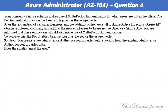Question number four. Your company's Azure solution makes use of multi-factor authentication for when users are not in the office. The per-authentication option has been configured as the usage model. After the acquisition of a smaller business and adding new employees to Azure Active Directory, these employees should also use multi-factor authentication. To achieve this, the per-enabled-user setting must be set for the usage model. The proposed solution is: you create a new multi-factor authentication provider with a backup from the existing MFA provider data. Does this meet the goal? The correct option is B: No. Existing authorization providers may continue to be used and updated, but migration is no longer possible.